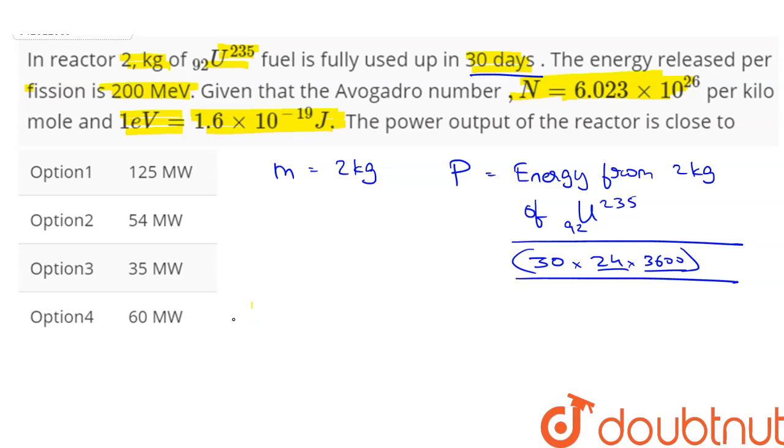So energy per fission, denoted as E per fission, is equal to 200 mega electron volts.